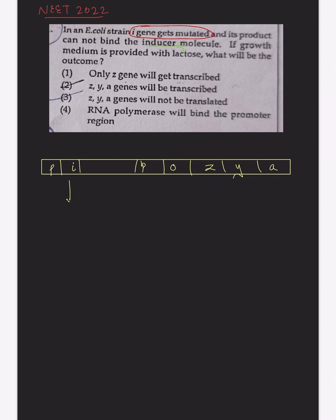Normally, the i gene is responsible for the formation of an mRNA that codes for a repressor. Once the repressor is formed, it can bind to the operator region. If the repressor is binding to the operator region, it will no longer allow the binding of RNA polymerase to the promoter region, so RNA polymerase will not be able to initiate transcription or translation of the Z, Y, and A genes.